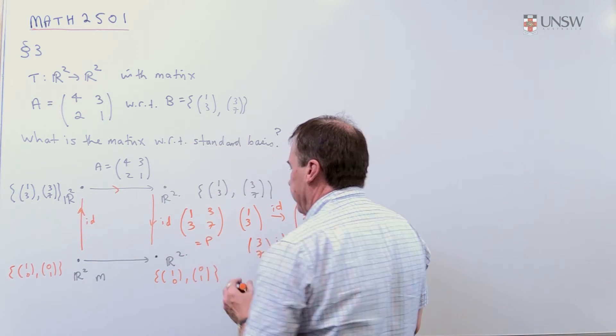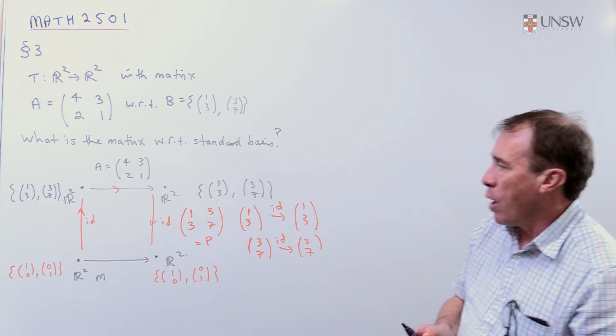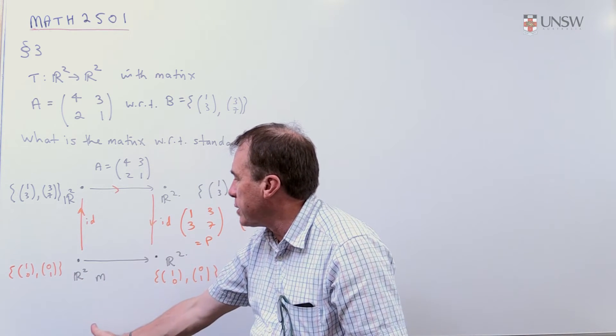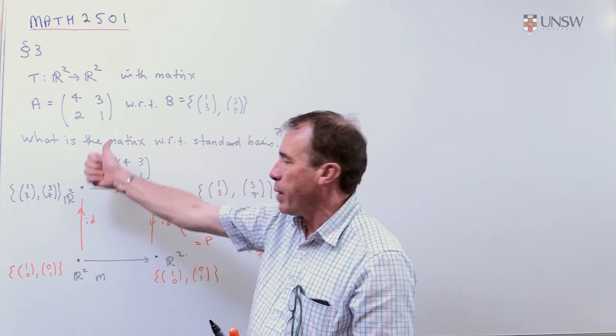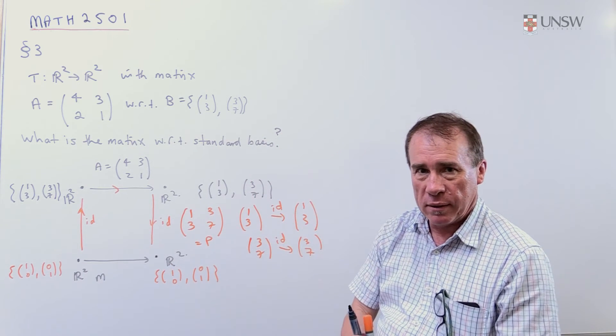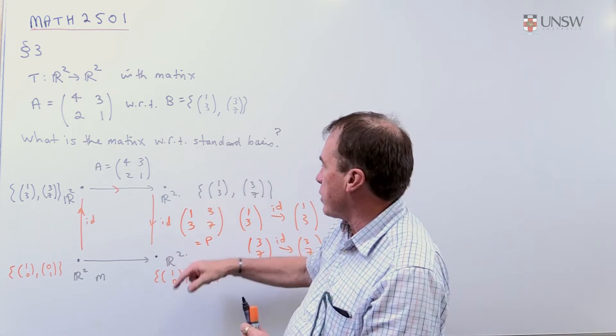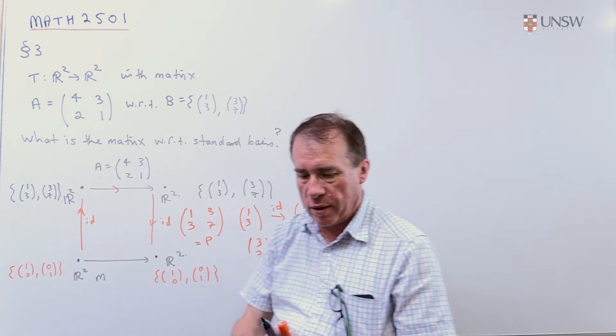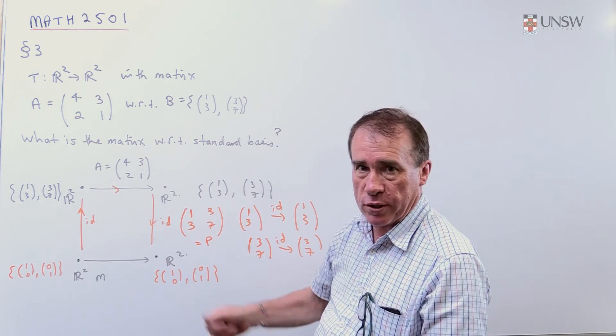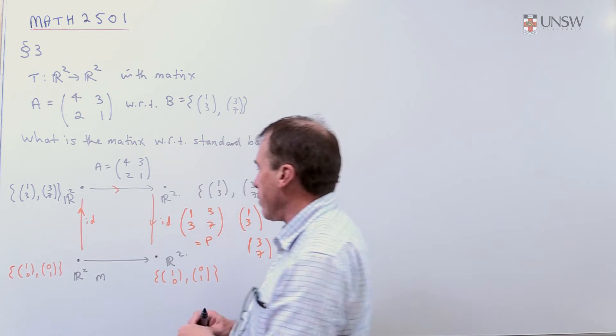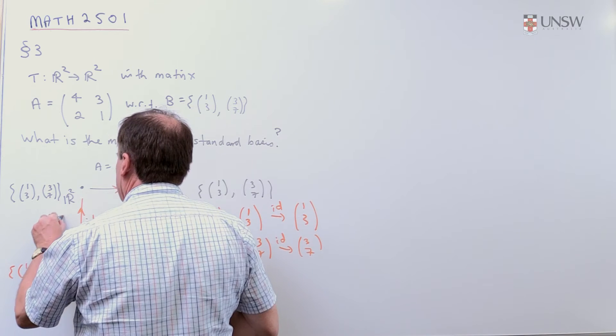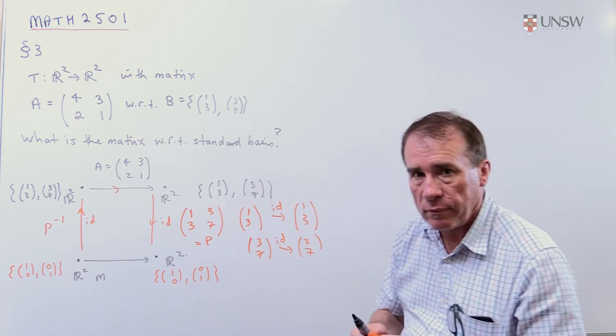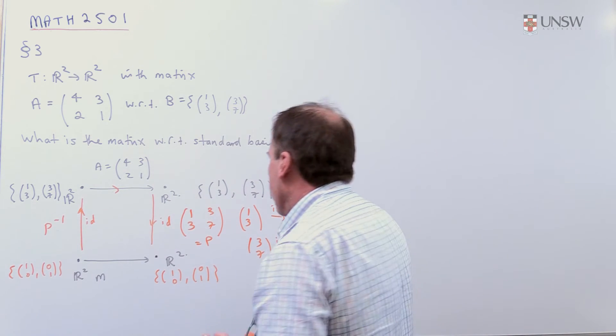Now, what's happening on the other side? Well, again, it's the identity map, except we're going back the other way. And so if the matrix from here to here is given by P, then the matrix simply going back the other way, the identity matrix is given by P inverse. So over here, this is going to be the matrix P inverse.